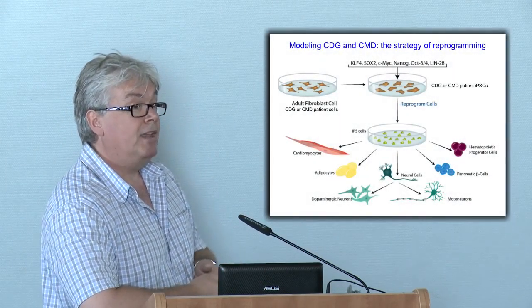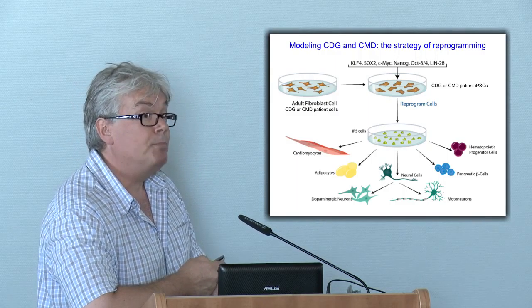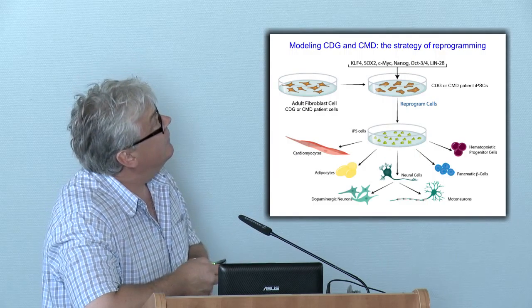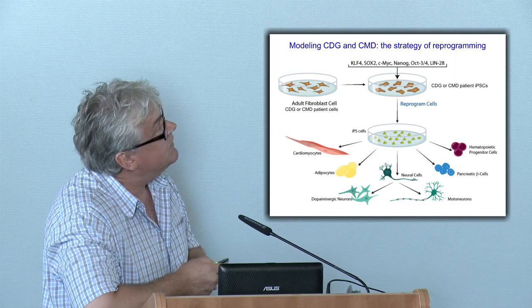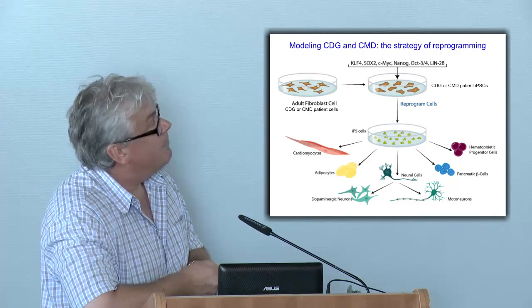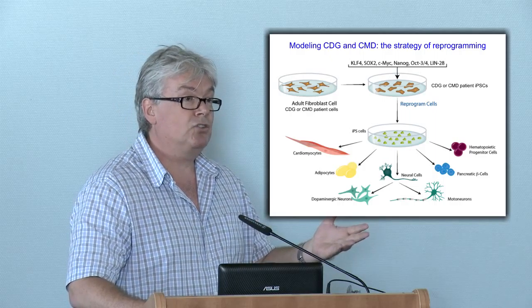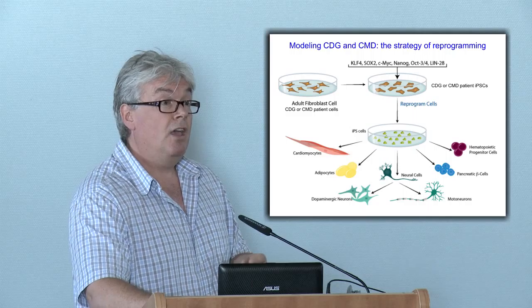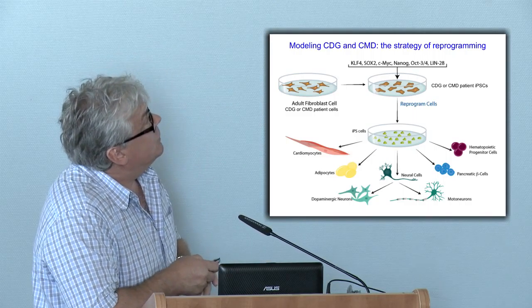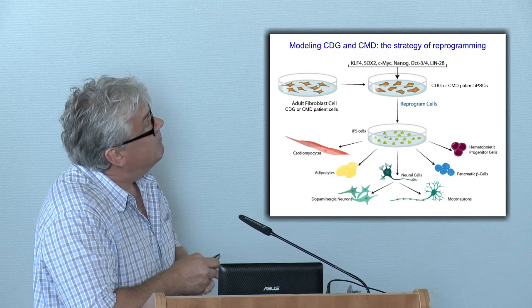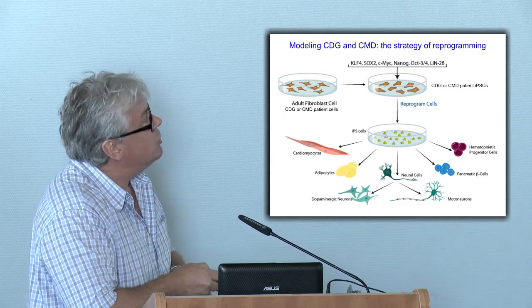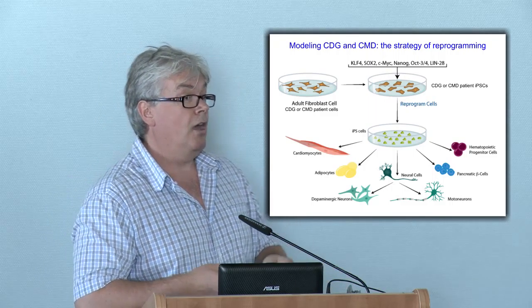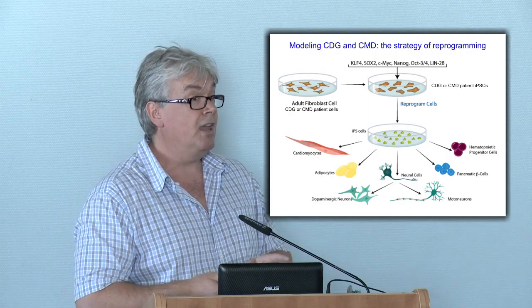The process of reprogramming involves taking peripheral blood or a skin cell biopsy from an individual — a patient, for example — and then treating them with a cocktail of small molecules, drugs, or transgenes that reverse the differentiation of these cells back to a stem cell state. We can now generate patient-specific stem cells that have all of the mutations in that patient. These can then be differentiated into any cell type you desire — if you're interested in PMM2 CDG, you can differentiate them into neurons or hepatocytes, depending on the question you're asking.